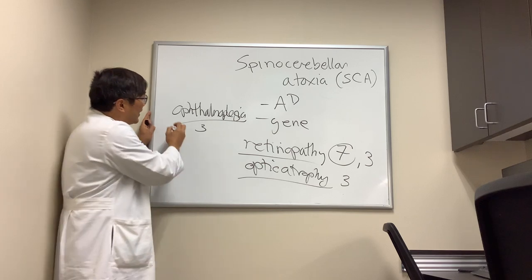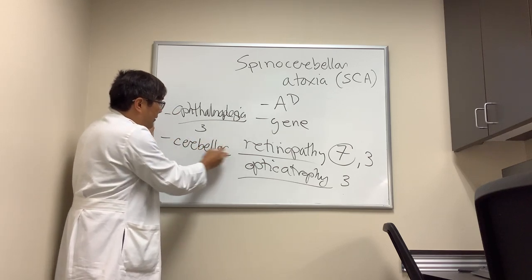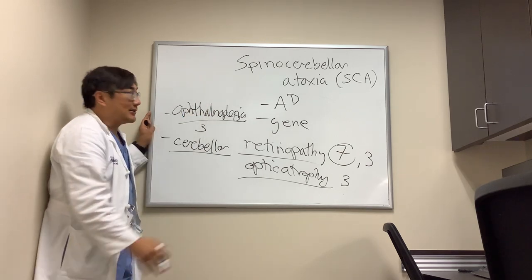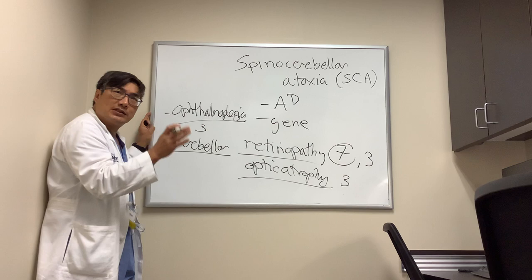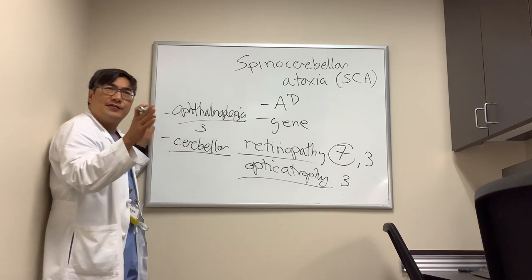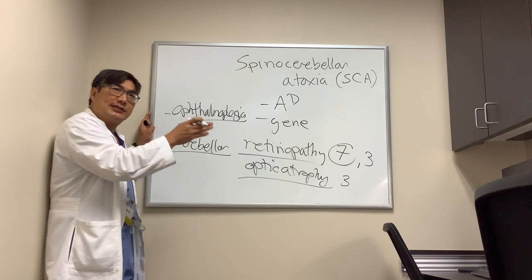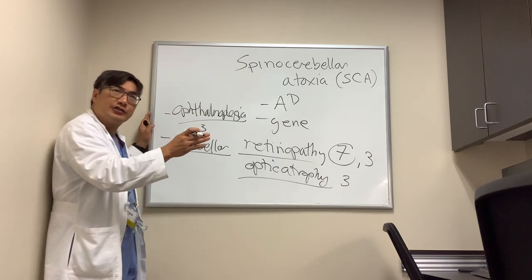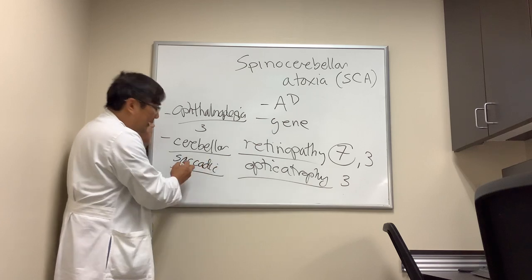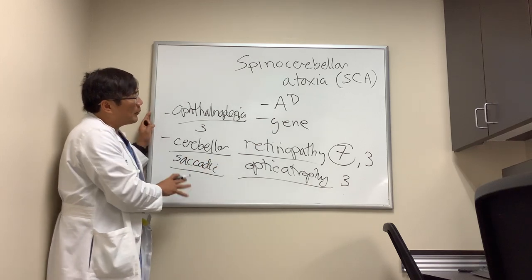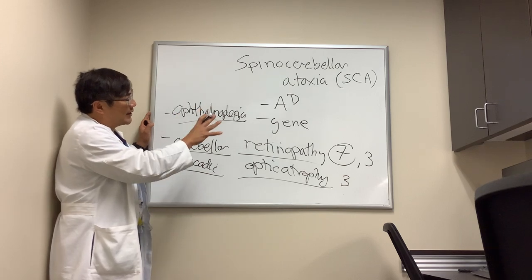The cerebellar eye signs will be present in almost all SCAs since it is spinocerebellar ataxia. These are the nonspecific signs: gaze-evoked nystagmus and saccadic dysmetria — meaning the saccade will show overshoot or undershoot. So saccadic abnormalities are a nonspecific but important finding when evaluating these patients.